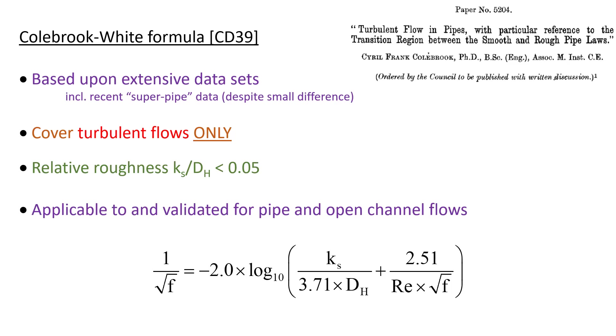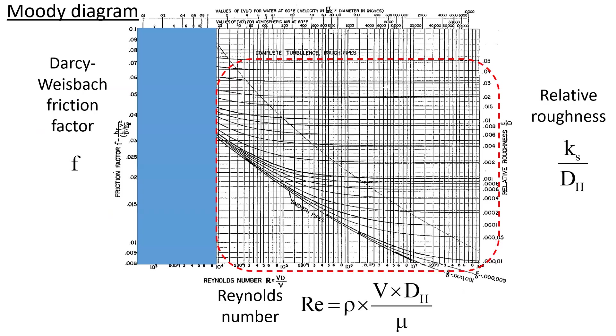Importantly, the Colebrook-White formula covers only turbulent flow with relative roughness height less than 0.05. It is applicable and validated for both pipe and open channel flow. In the Moody diagram, the applicability of the Colebrook-White formula corresponds to the turbulent flow region illustrated by the dashed red line.